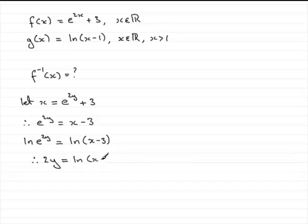And we need to now just divide both sides by 2, and we end up with y equals a half the natural log of x minus 3.